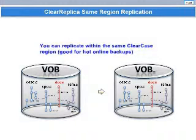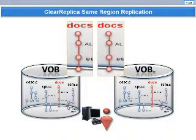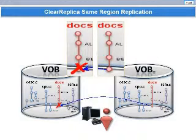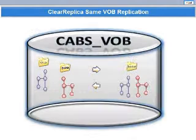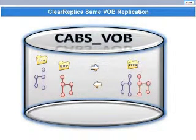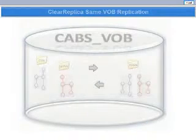With ClearReplica, you can replicate a VOB or portions of a VOB in the same region so long as that VOB has a different name. This can allow developers to recover lost data without involving the IT department. For instance, if a privileged user accidentally removed the latest version of documentation in the VOB, that user could go to the hot backup VOB and recover that version, then check it into the main VOB in a fraction of the time it would take to recover from tape backup. With ClearReplica, you can even replicate VOB data to another directory in the same VOB, useful for recovery of accidental data deletion or for implementing policy or security.